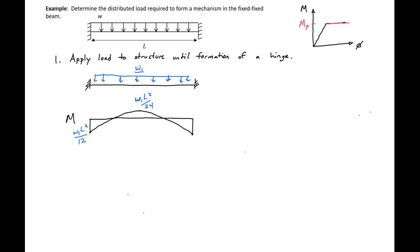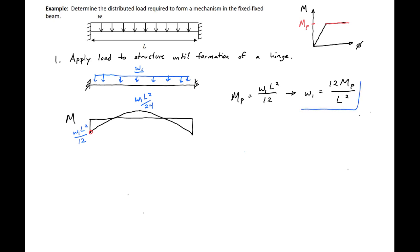We're going to apply the load until we reach a plastic moment at the ends of the member. At this point we'll have our plastic moment capacity equal to W1 L squared over 12, which we can then solve for W1, which will be equal to 12 MP over L squared. So this is the load required to cause hinging at the ends of the member.